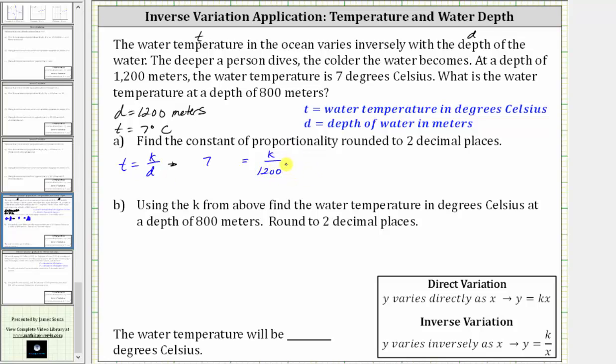Notice to solve for K and undo this division, we multiply both sides of the equation by 1,200. Notice on the right side, 1,200 divided by itself simplifies to one, giving us K equals seven times 1,200, which is 8,400.